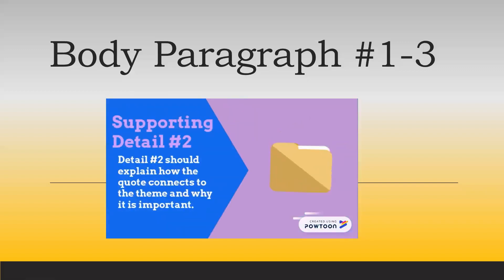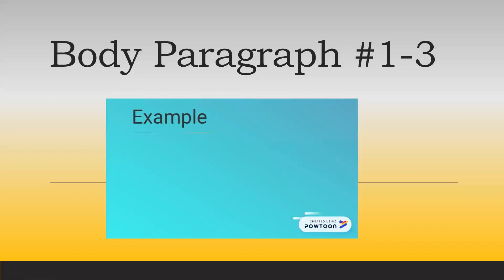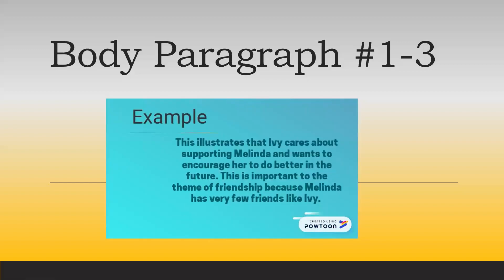Supporting detail two should explain how the quote connects to the theme and why it is important. For example, the sentence, this illustrates that Ivy cares about supporting Melinda and wants to encourage her to do better in the future. This is important to the theme of friendship because Melinda has very few friends like Ivy. You will see I've explained the connection to the theme and why it's important.